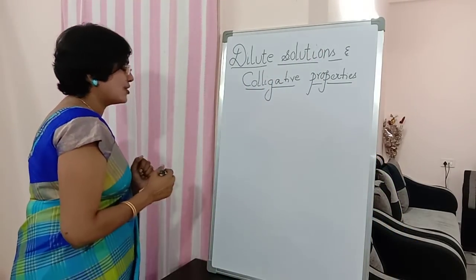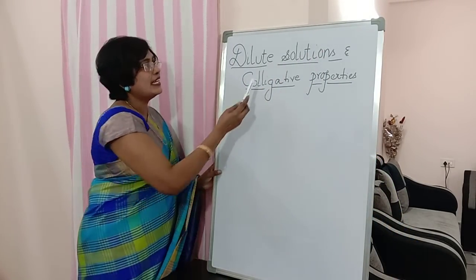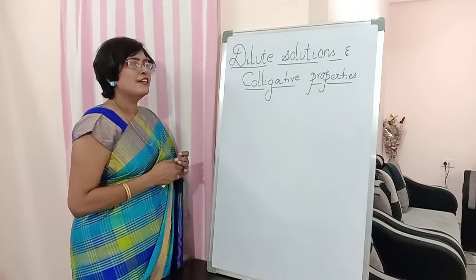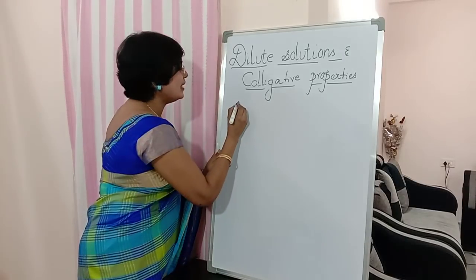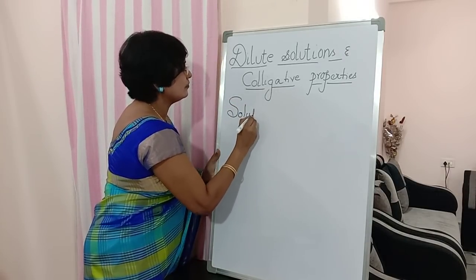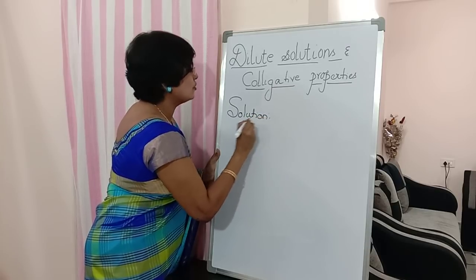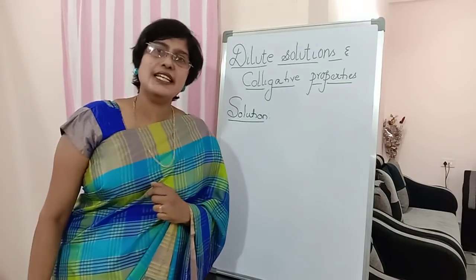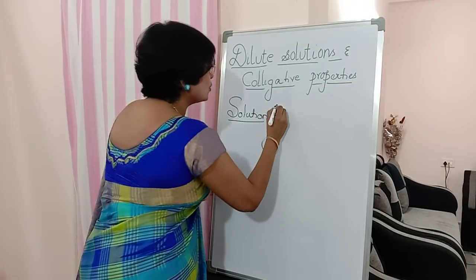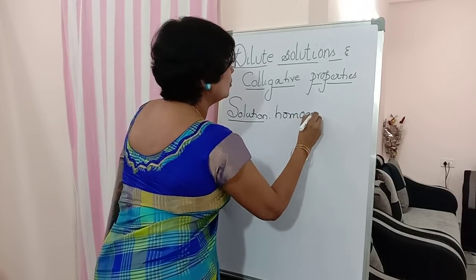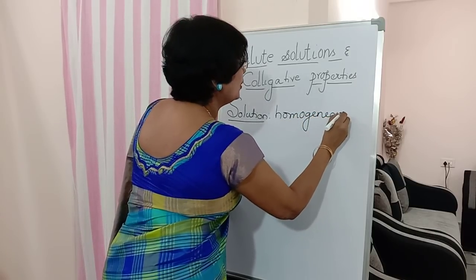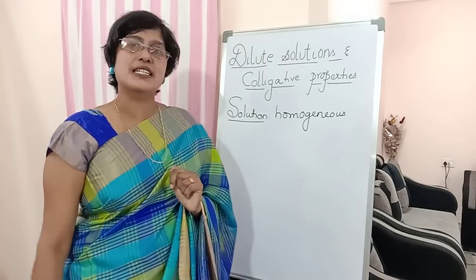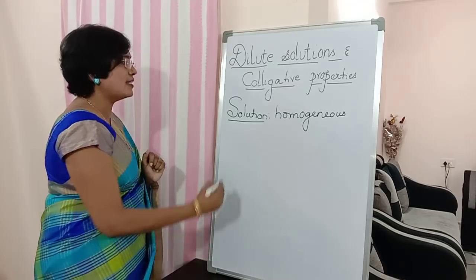In our topic heading there is 'dilute solution' and also 'colligative property.' First I want to begin with the solution. Put the side heading: Solution. What is a solution? A solution is the homogeneous mixture — spelling H-O-M-O-G-E-N-E-O-U-S — a homogeneous mixture of two or more substances is called a solution.